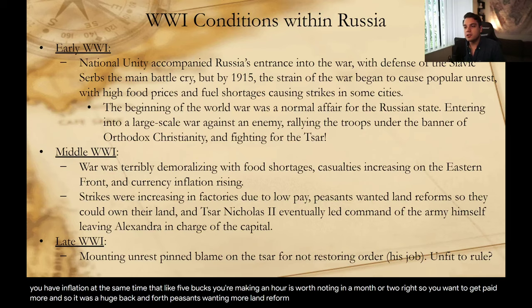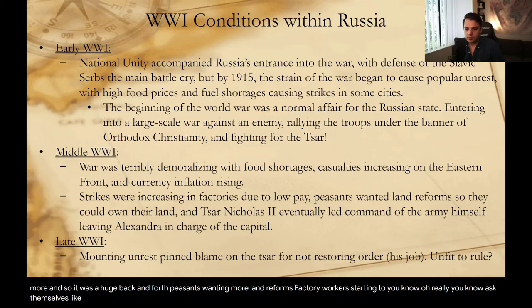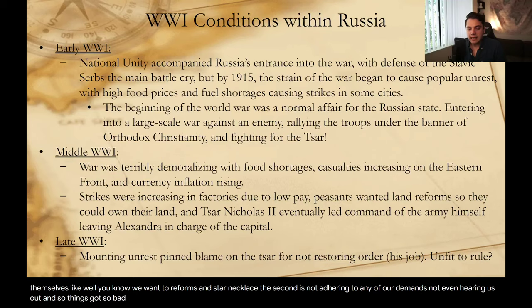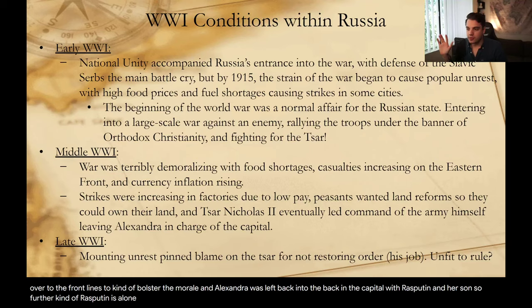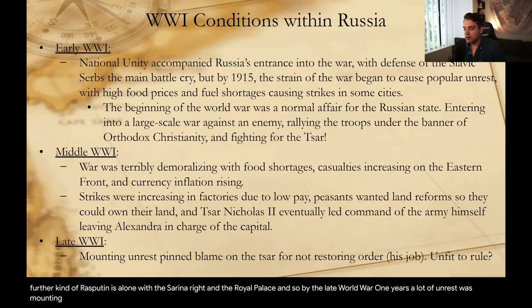Things got so bad that the front line troops started to lose morale. Tsar Nicholas II eventually went over to the front lines to bolster morale, while Alexandra was left back in the capital with Rasputin and her son — further fueling rumors that Rasputin was alone with the Tsarina in the royal palace. By the late World War I years, a lot of unrest was mounting. Inflation was up, food shortages were up, the casualty rates were stacking up.